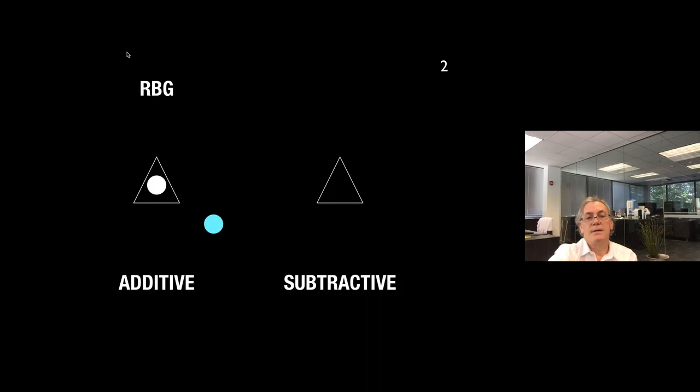If we eliminate the blue, we are left with the green and the red that mix together, form a primary of the subtractive. The yellow becomes a primary of the subtractive system.